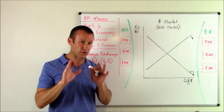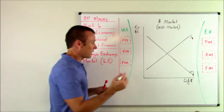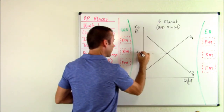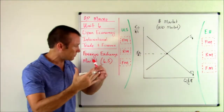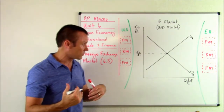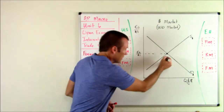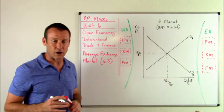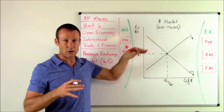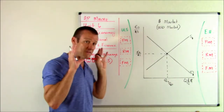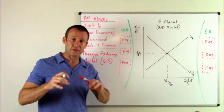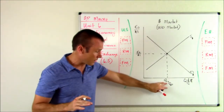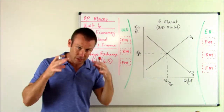The equilibrium in this market is associated with some exchange rate — some amount of euros that have to be given up to get one dollar — where the quantity supplied of dollars equals the quantity demanded for dollars. This market is very efficient at finding this market-clearing exchange rate.